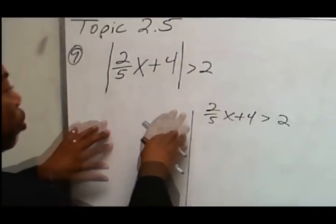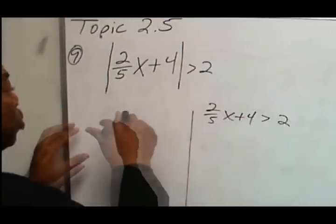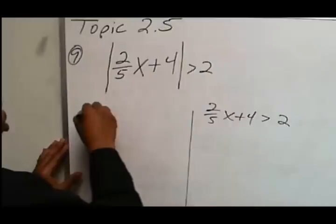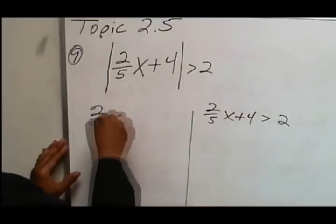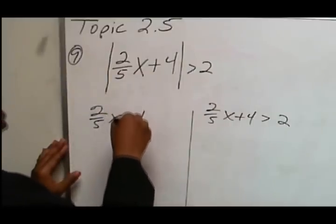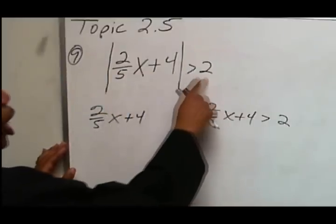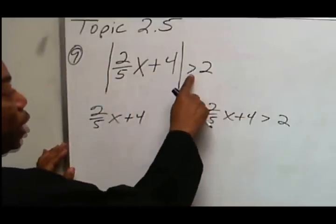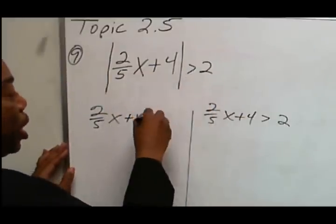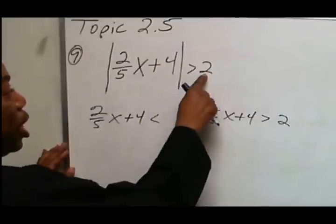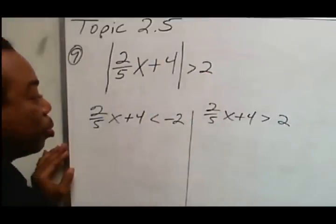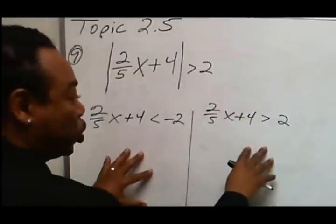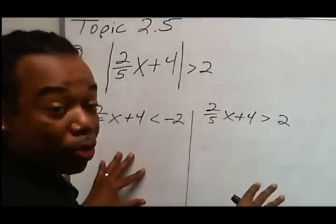On the left side, we remove the absolute values again — 2/5x plus 4 — but change both of these signs. This will become a less than, and this will become a negative 2. And then we solve both equations.